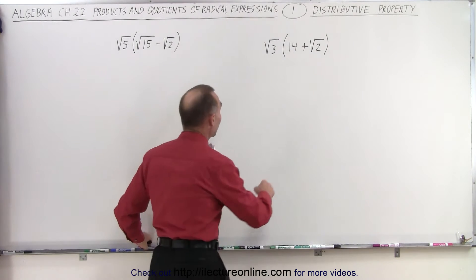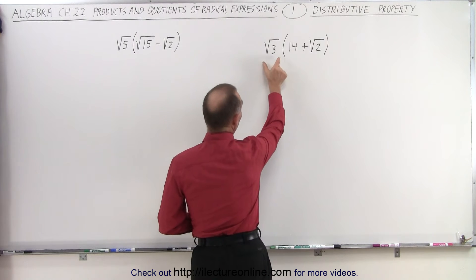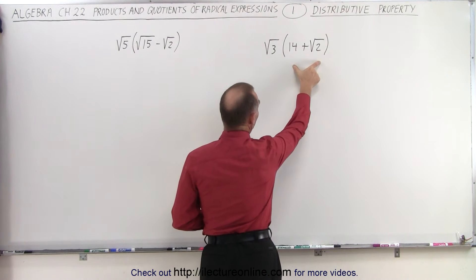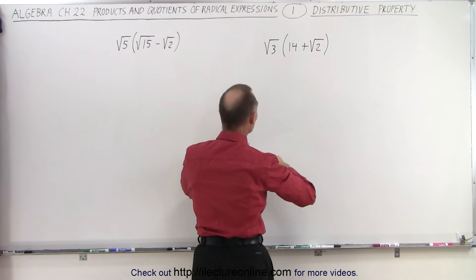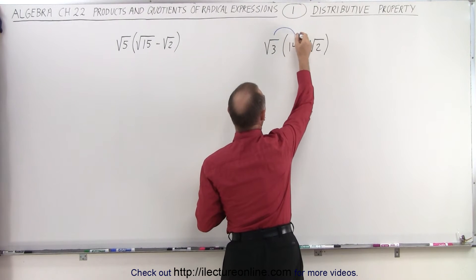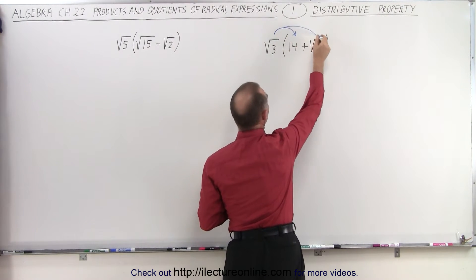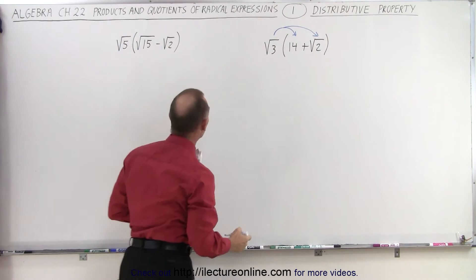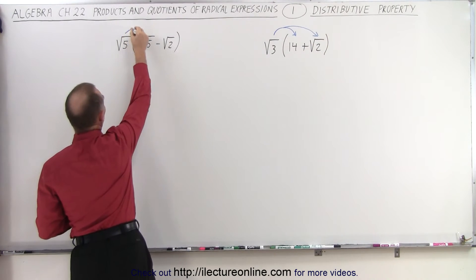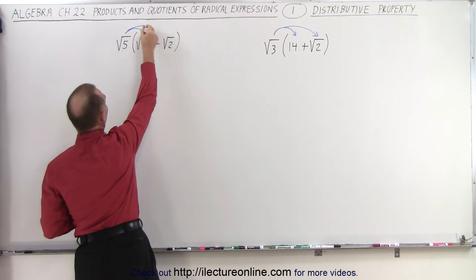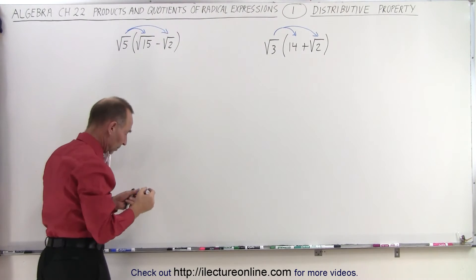For example, when we have this multiplication here, we have the square root of three multiplied by the quantity 14 plus the square root of two. We realize that the square root of three is multiplied both by the 14 and the square root of two. Over here we have the same situation. We're going to multiply the square root of five by both terms inside the parentheses.